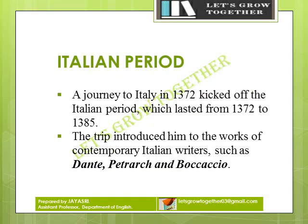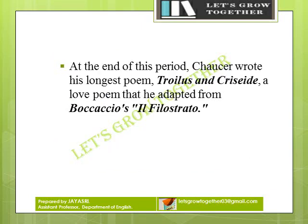A journey to Italy in 1372 kicked off the Italian period, which lasted from 1372 to 1385. The trip introduced him to the works of contemporary Italian writers such as Dante, Petrarch, and Boccaccio. At the end of this period, Chaucer wrote his longest poem, Troilus and Criseyde, a love poem that he adapted from Boccaccio's Il Filostrato.